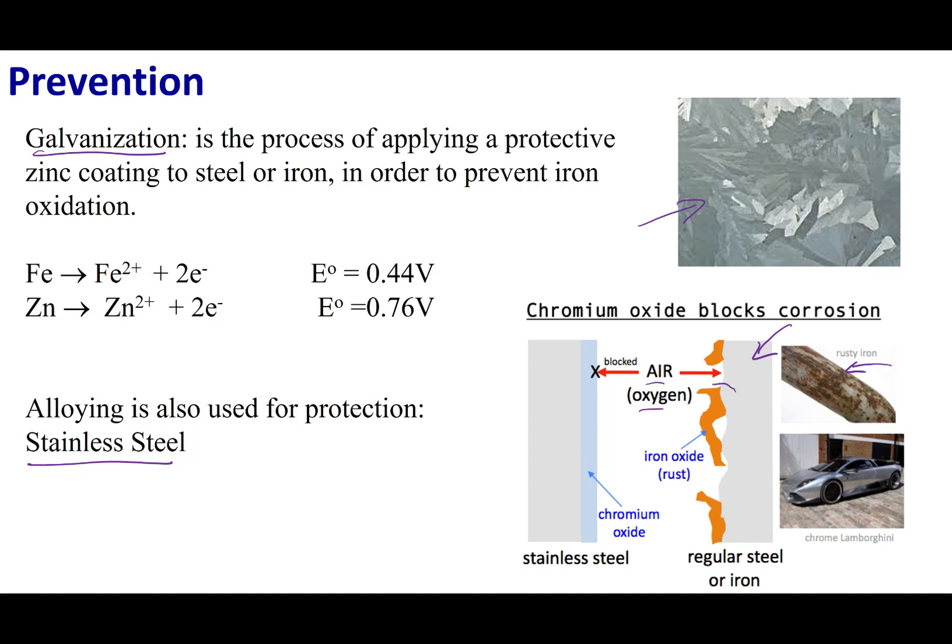So what happens is I oxidize my iron. It makes this orange flaky material. This orange flaky material flakes off, and now I have an exposed surface of iron. And so I can continue eating away at my iron. And eventually, I'm going to damage the structural integrity of my iron or steel.